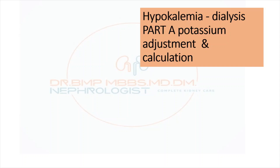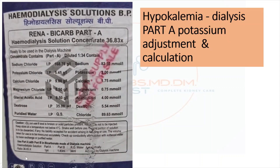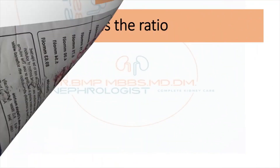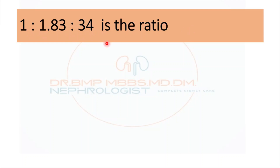First, we will see the ratio followed in standard dialysis for the formation of the final dialysate. As shown in this image, Part A is approximately 1 part, Part B is 1:8, and the RO water makes up the remaining volume — around 34 parts. Most of the dialysate component is water. The ratio for dialysate is 1:1:8:34, where 1 part is Part A containing all the electrolytes, 8 parts is Part B which is mainly bicarbonate, and 34 parts is RO water.